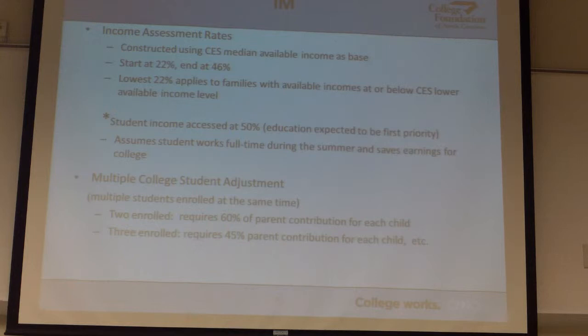I talked about the number of students in college and why we don't use 50% — we don't just divide by the number of students. We use 45%: we multiply the contribution by 45%, and with three students in school it gets even a little bit harder.